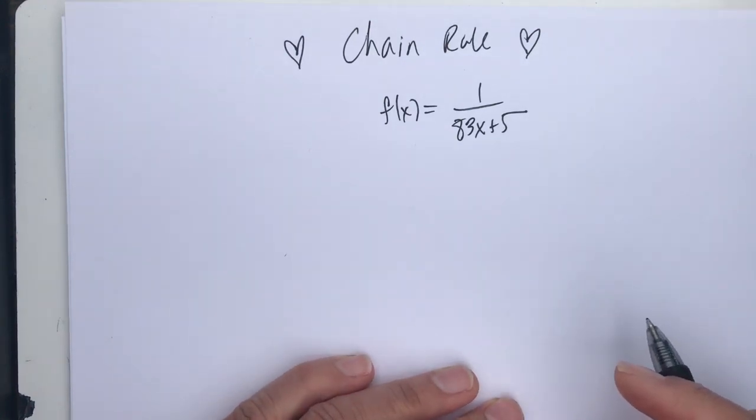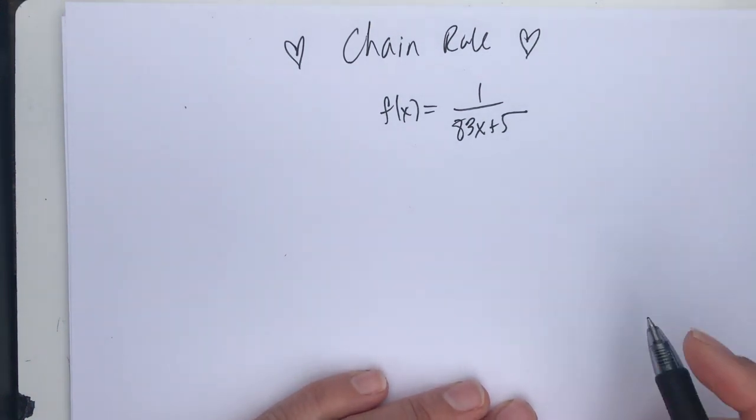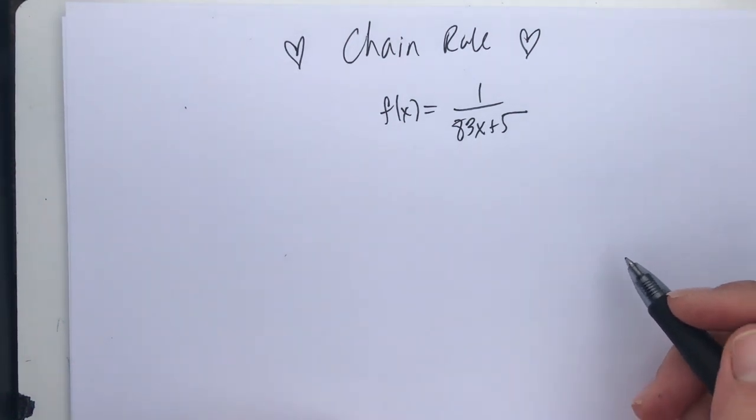All right, Calcularians, this is the last installment of the chain rule and my efforts to get you to love it. In this example, we're going to look at a rational function. So f of x is 1 over 83x plus 5.